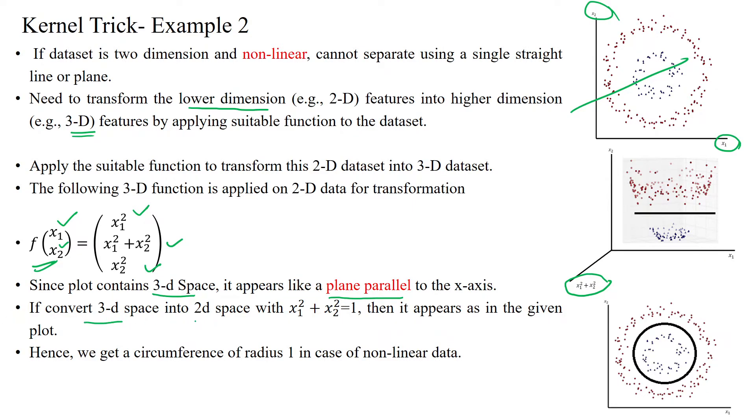If we convert the 3D space into 2D space we will get the equation x1 square plus x2 square equal to 1 which is appearing like a circle. Circle equation.